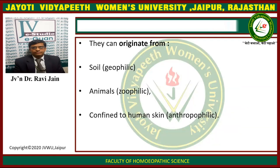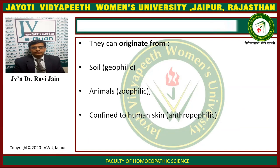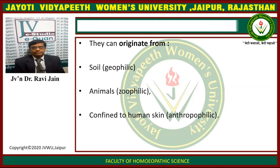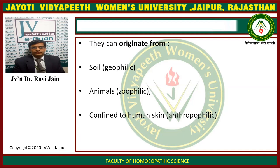They can originate from soil, animals, or can be confined to human skin. If they are originating from the soil, it is known as geophilic. If arising from animals, it is known as zoophilic. And if they are confined to the human skin, it is known as anthropophilic.